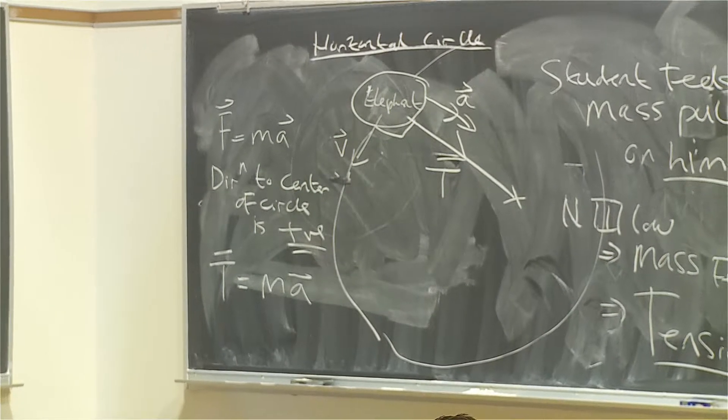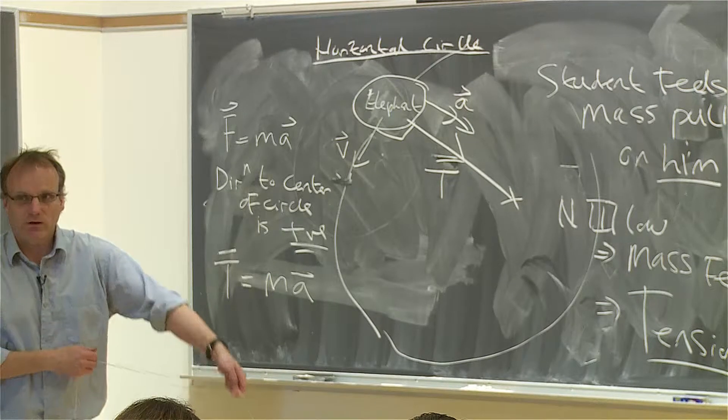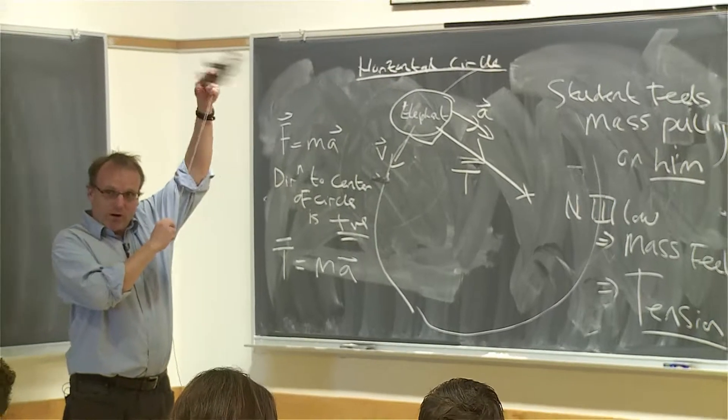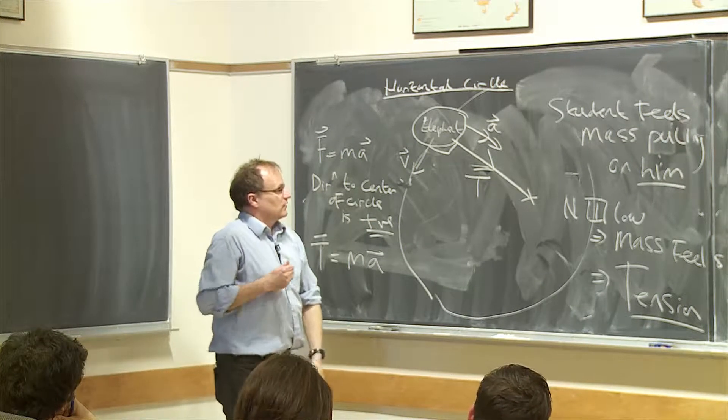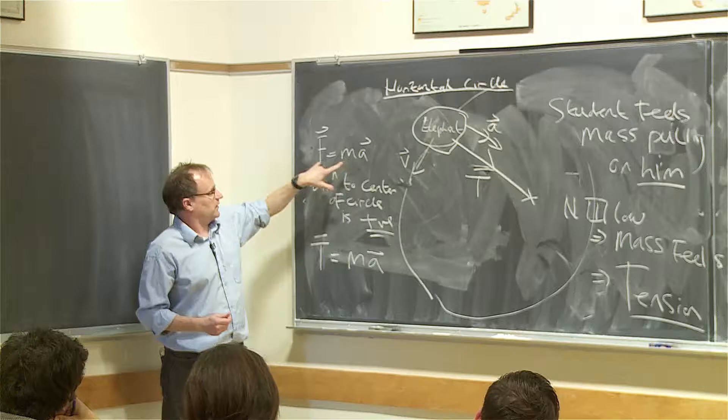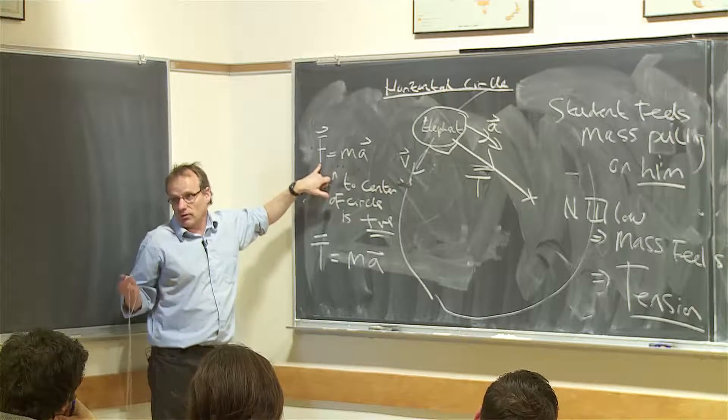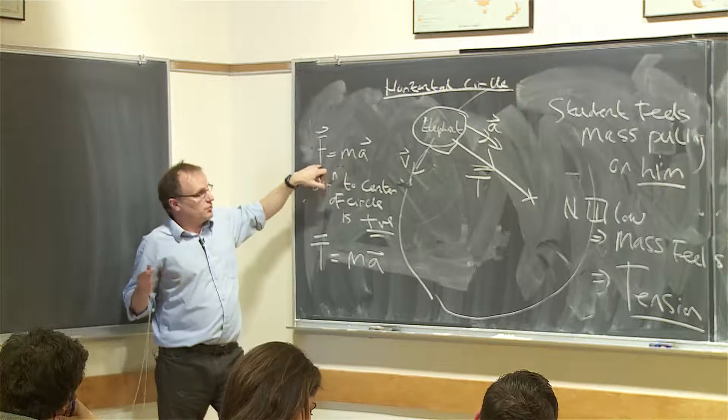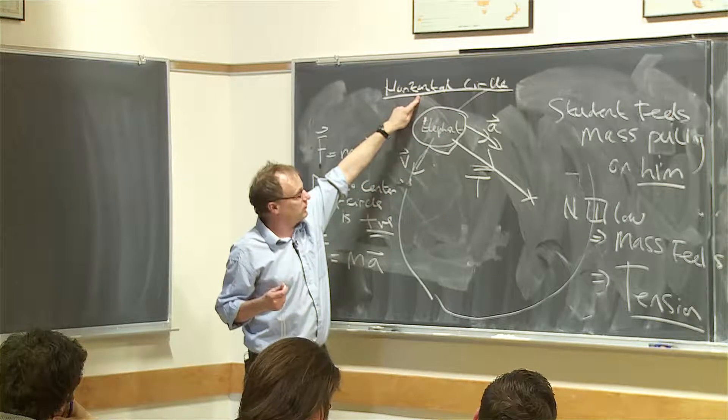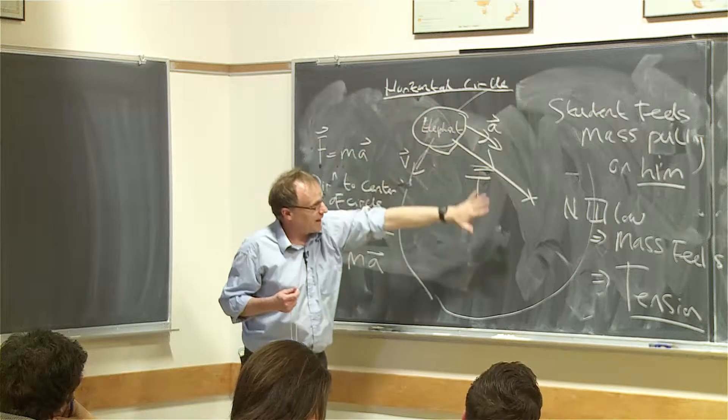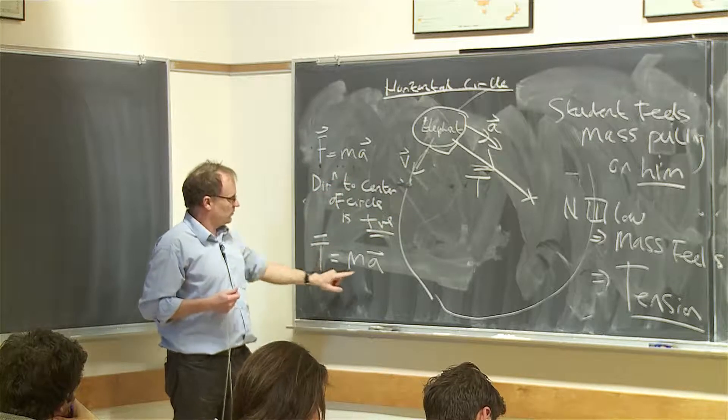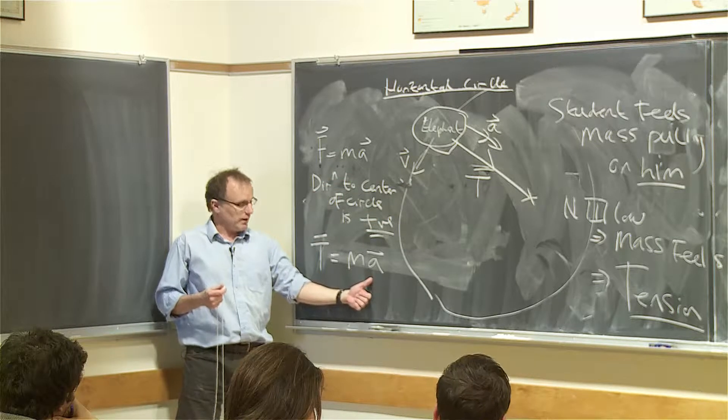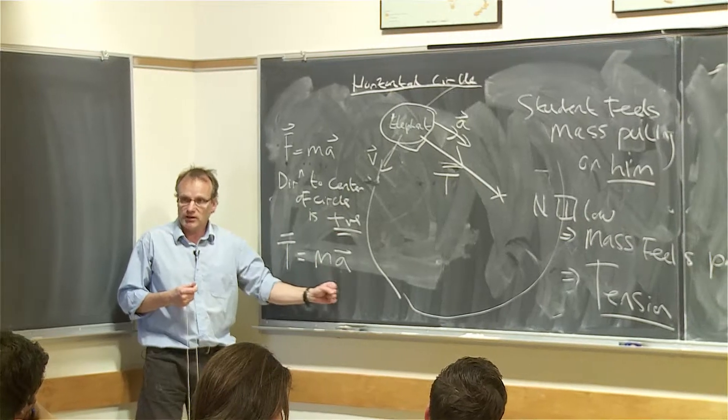Whenever something moves, it's really, as I say, it's not intuitive, but whenever something moves in a circle, the acceleration, first of all, you know the acceleration has to be in the same direction as the force, Newton's second law. You know that the only force on the elephant in a horizontal circle in this plane is the tension. So we write F equals MA, T equals MA, these have to be in the same direction, so the acceleration must be towards the center of the circle.